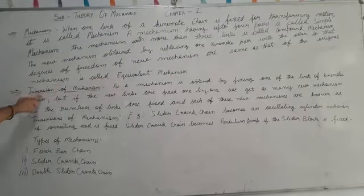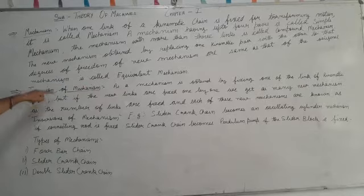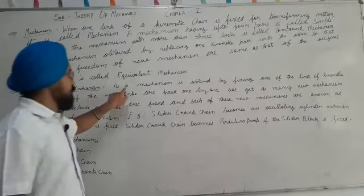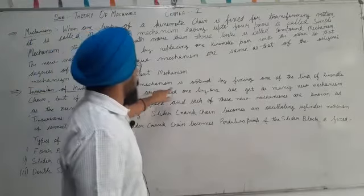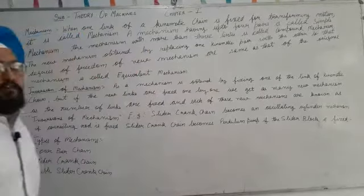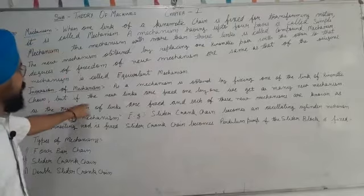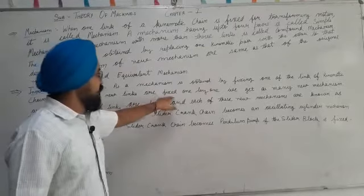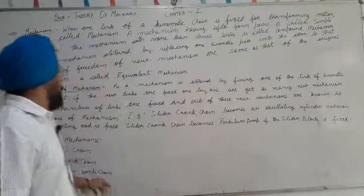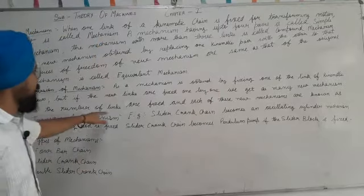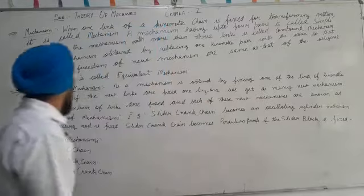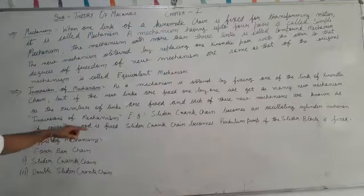This is the inversion of mechanism, which is related to the mechanism only. A mechanism is obtained by fixing one of the links of the kinematic chain, but if different links are fixed one by one, we get as many new mechanisms as the number of links. Each of these new mechanisms is known as an inversion of the mechanism.